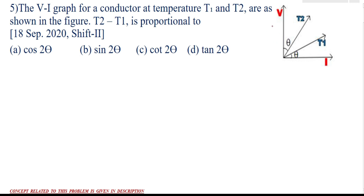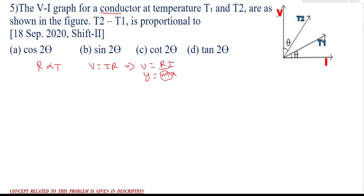He gave that this is a VI graph of a conductor, showing the variation of voltage with current at two different temperatures. We know that resistance depends upon temperature and for a conductor, resistance is directly proportional to temperature. From Ohm's law, V equals IR, which can be written as V equals R into I. Comparing this with Y equals MX, where Y is voltage and I is current, the slope represents the resistance. So the slope of the VI graph gives the resistance, and the formula for slope is M equals tan theta.